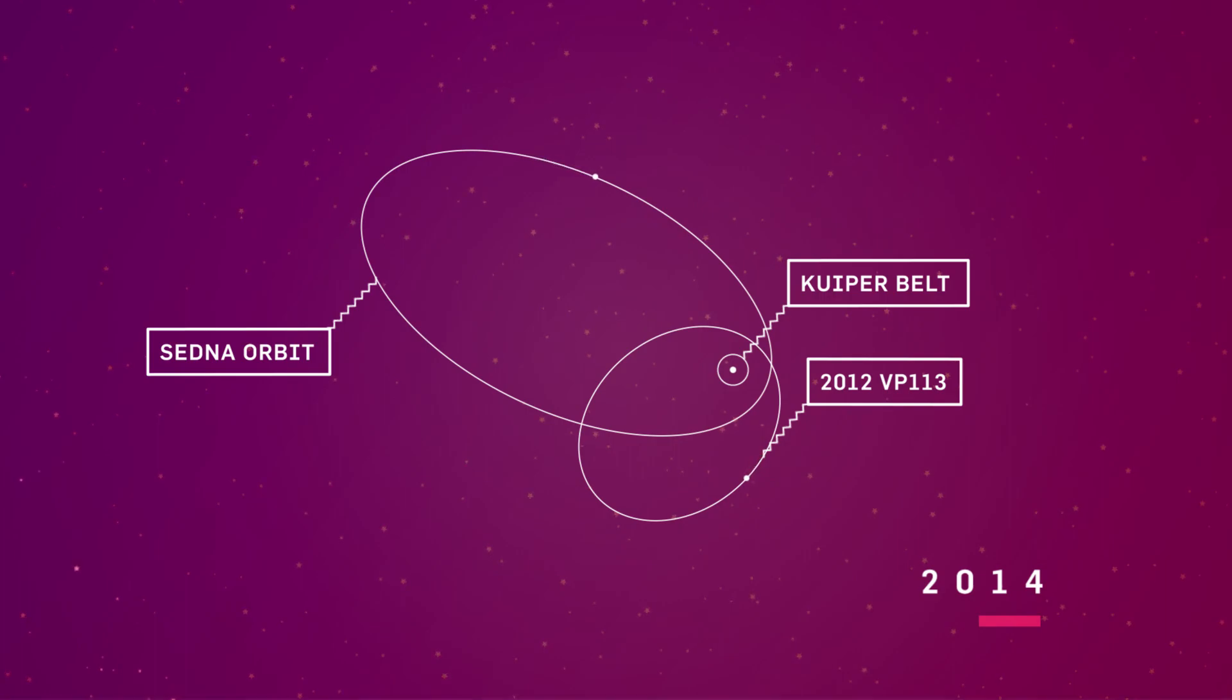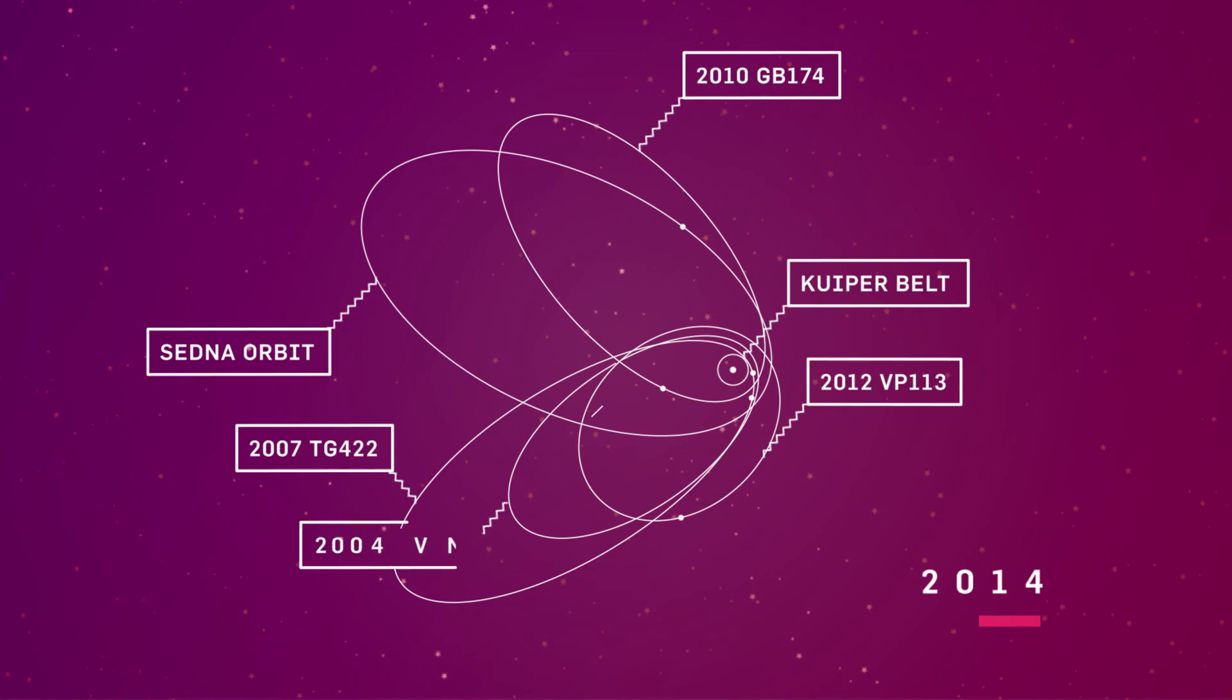Eventually, researchers found four more objects with similar lopsided orbits, and they all happened to sweep out in the same direction. Brown noticed another pattern. All six bodies lined up in space and moved at different rates in the same direction.